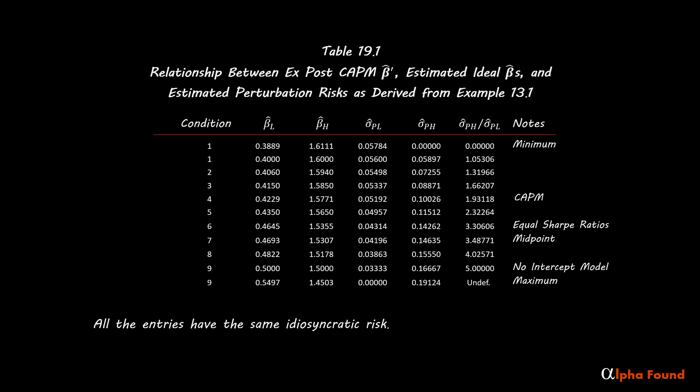Returning to Table 19.1, all of the possibilities in Table 19.1 have the same idiosyncratic risk. Residual variance is unique in OLS in that only one line will minimize squared errors.